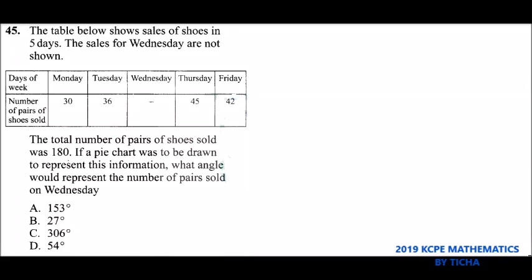Question number 45: The table below shows the sales of shoes in five days. The sales for Wednesday are not shown. We have days Monday, Tuesday, Wednesday, Thursday, Friday. On Monday 30, Tuesday 36, Wednesday is not given, 45 on Thursday, and 42 on Friday. The total number of pairs of shoes sold was 180.